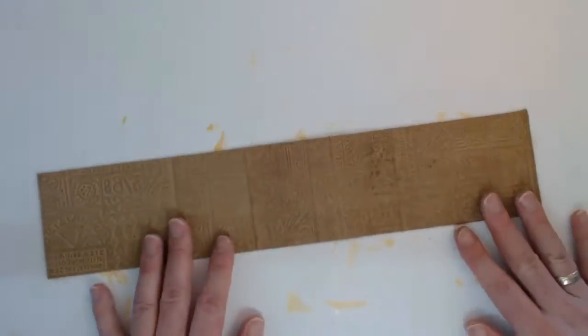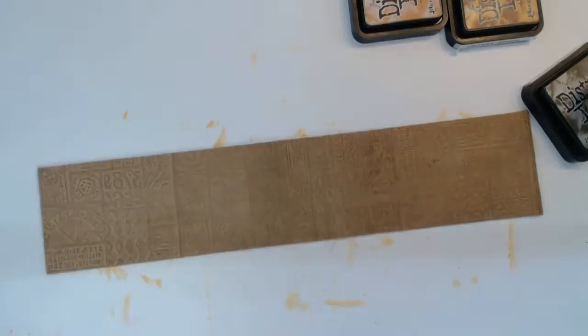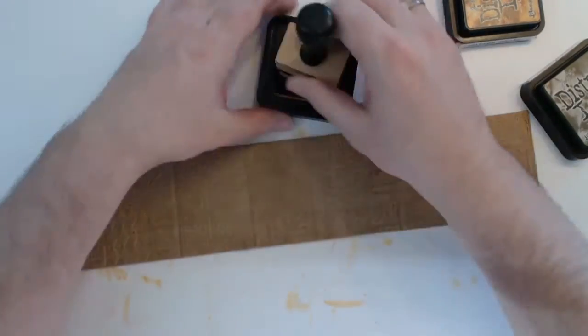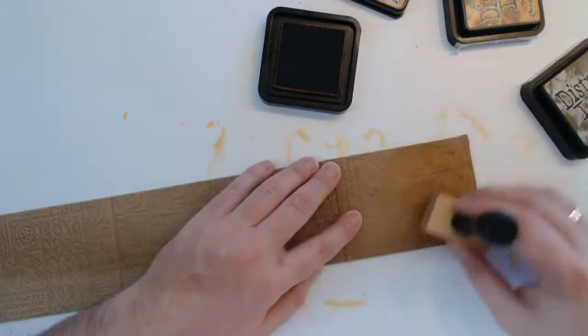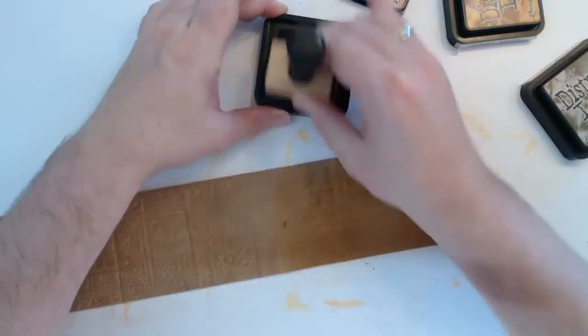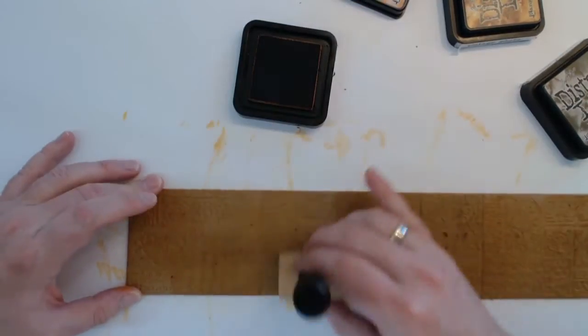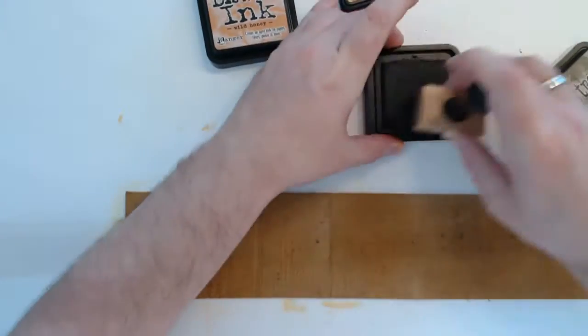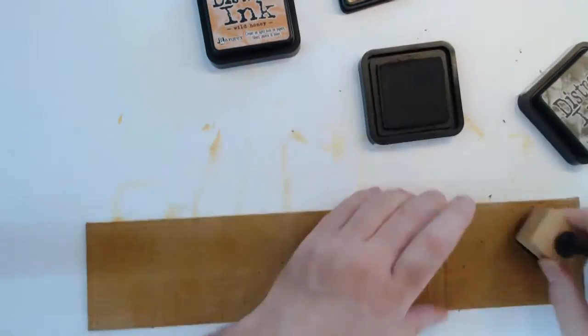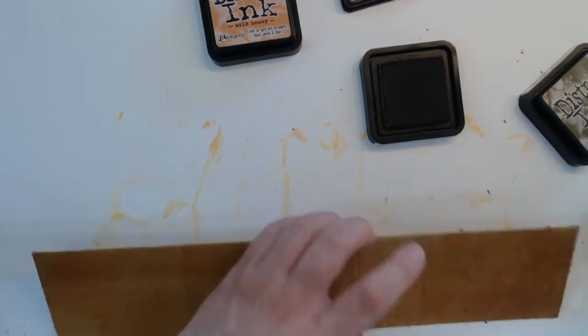And of course I'm using an embossing folder again on the cover before having another break to get the cover totally dry again. And same as the pages, I'm using the distress inks on the cover and sealing it afterwards with glossy medium gel.